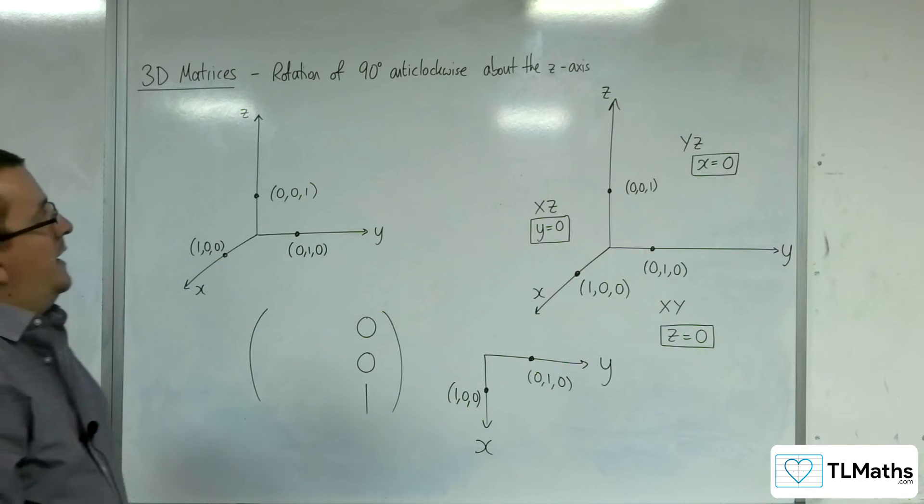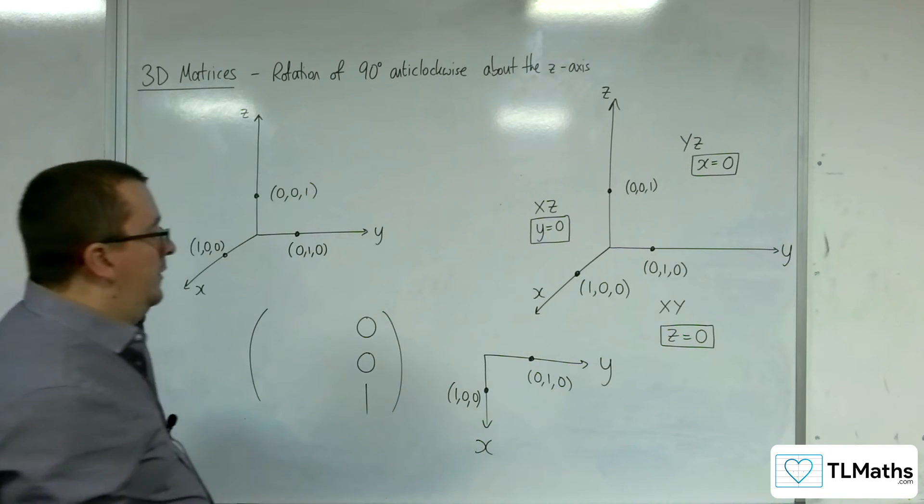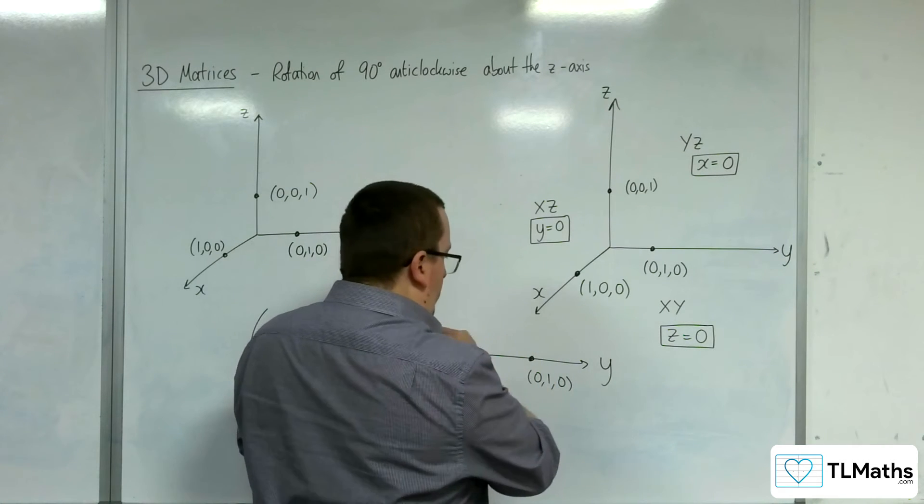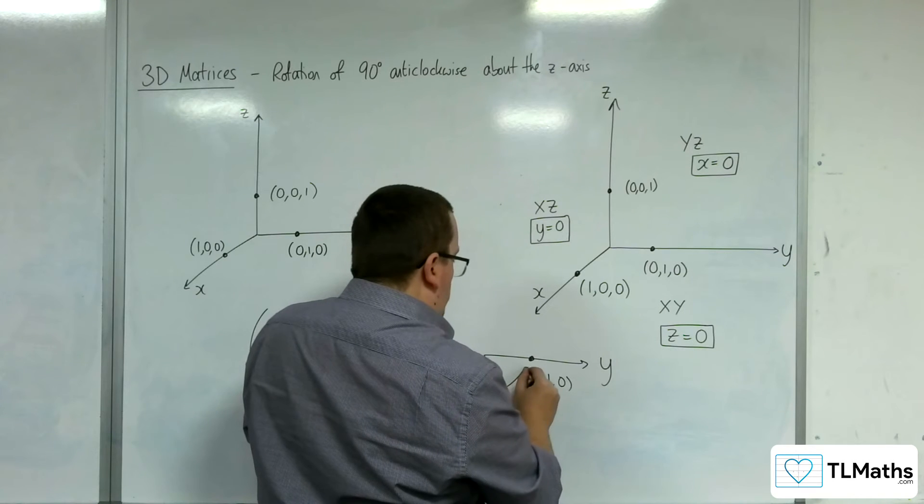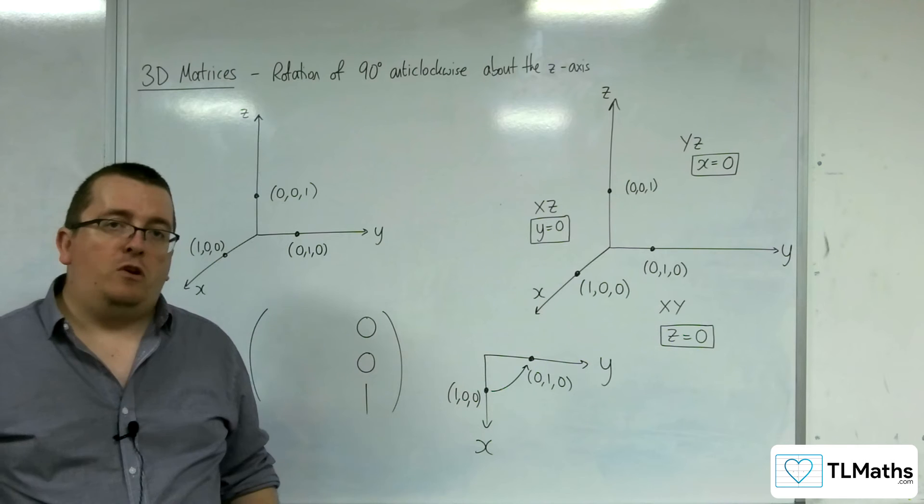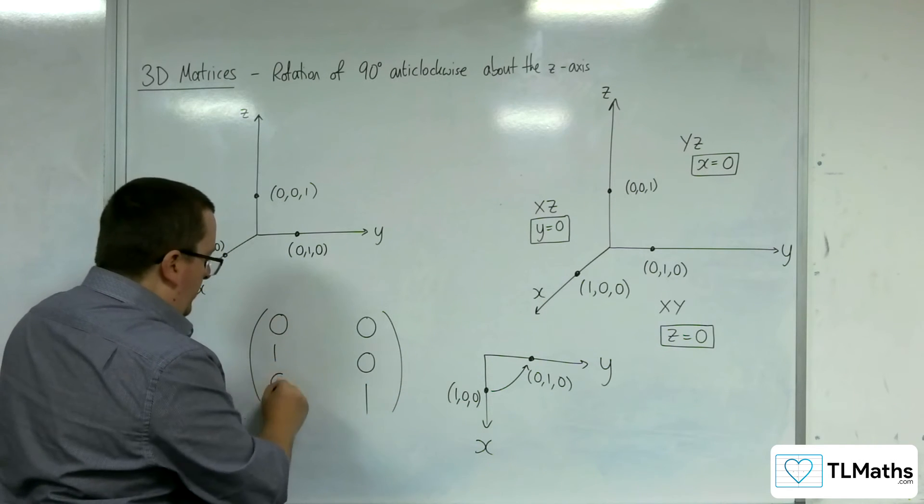If we were rotating 90 degrees anticlockwise, that way would be clockwise, anticlockwise would be this way. The 100 will rotate round onto 010. So 100 will become 010.